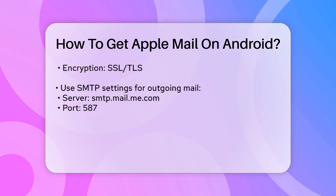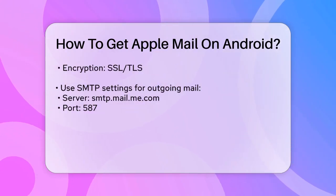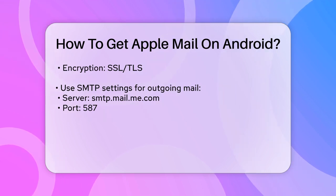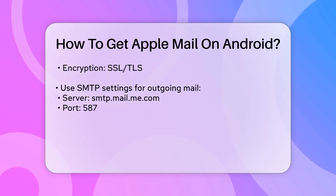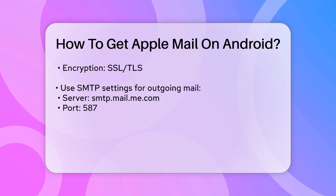For the outgoing mail server, use the SMTP settings. The server is smtp.mail.me.com. The port is 587 and it also uses SSL/TLS encryption.